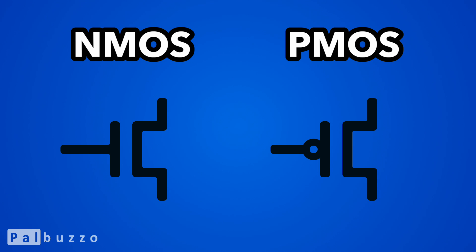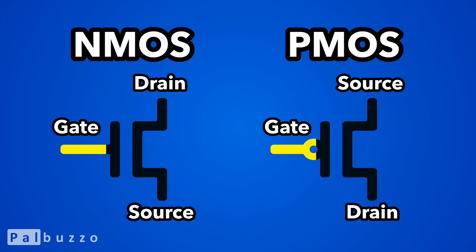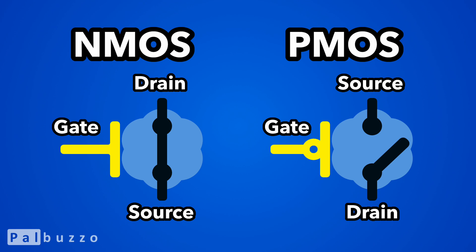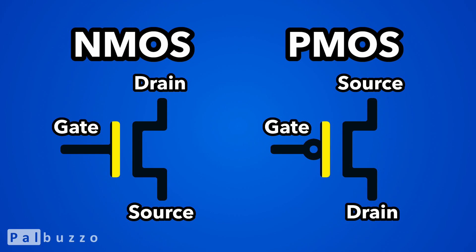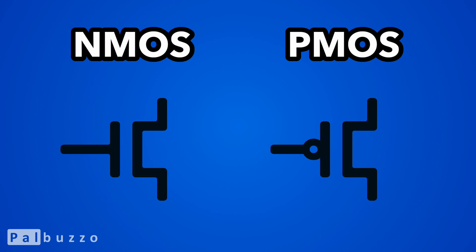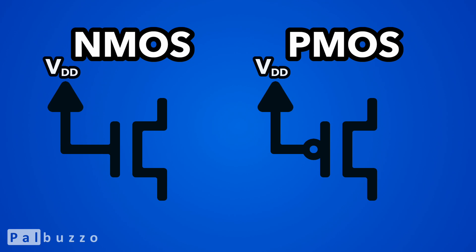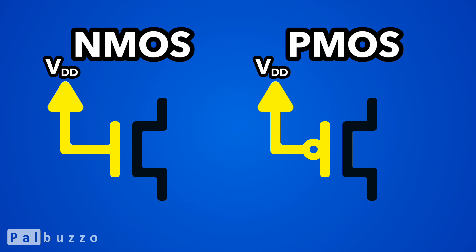At a high level, both NMOS and PMOS transistors have a gate, source, and drain. And by changing the voltage at the gate, we can control the connection between the source and drain. In this video, the gates for both types of MOSFETs will either be connected to ground, or to the circuit's positive supply voltage, VDD.